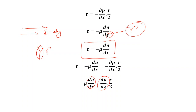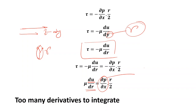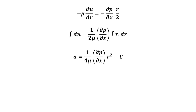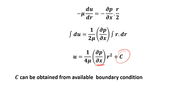To integrate, we select u and r as the two variables and treat ∂P/∂x, the pressure gradient (pressure difference per unit length along the flow direction), as a constant. Integrating gives: u = (1/4μ)(∂P/∂x) * r² + C. The constant of integration C is found using the no-slip boundary condition: at the pipe wall, r = R (pipe radius) and u = 0.